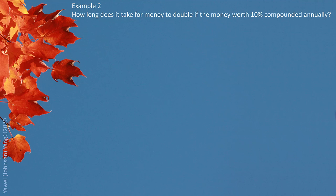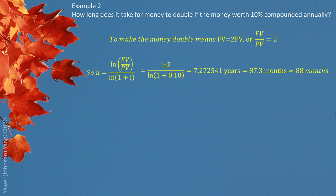Example 2. How long does it take for money to double if the money was 10% compounded annually? To make the money double, that means future value is twice as much as present value. Or means the ratio between future value and present value is 2. And we notice the formula actually directly related to the ratio of future value and present value. As long as we know the ratio, we don't really need to know future value and present value. So we can simply put the ratio in. We can get the answer.